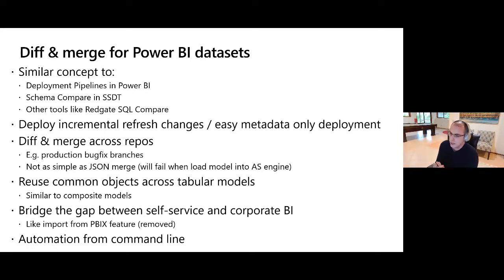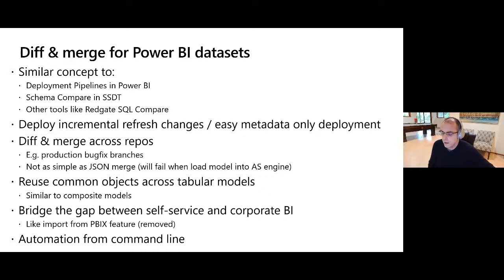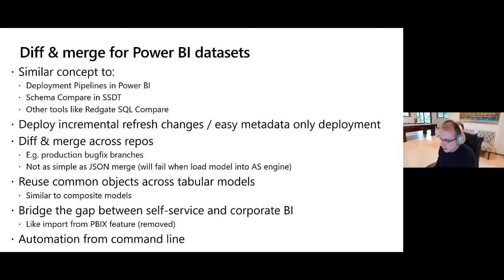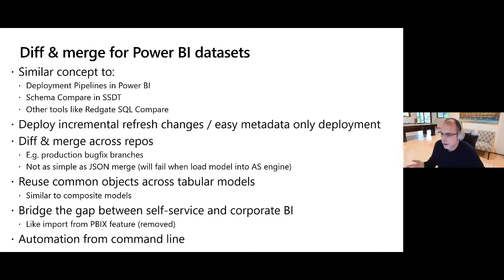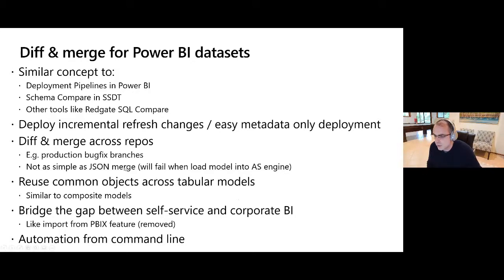One of the most popular use cases is metadata-only deployment for incremental refresh scenarios. When you have a lot of historical data in the service - say 70 gigabytes - and you just want to create a new measure or change some DAX objects, you don't want to reload all that historical data. ALM Toolkit is great for making metadata changes without touching existing data. You can also use it for merging across repos and branches in multi-developer environments.